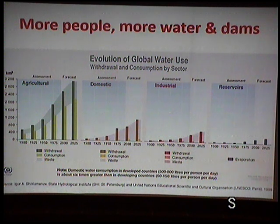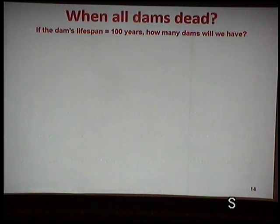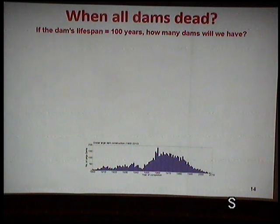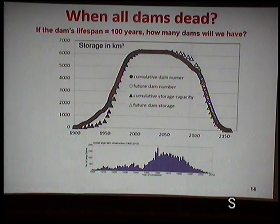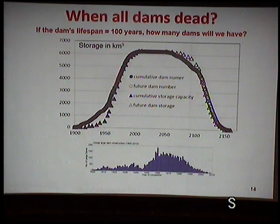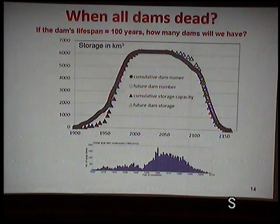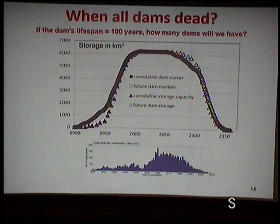Grandchildren's grandchildren will have no way to drink water from inland dams. A calculation assuming 100-year dam lifespan shows all existing dams will be gone and dead at that time, when population will be very high. Only this group of people can provide the solution through coastal reservoirs.